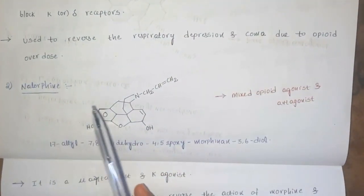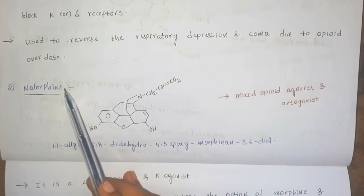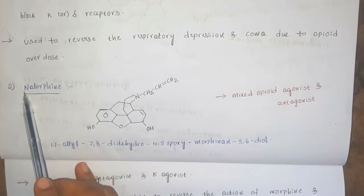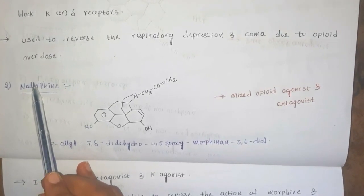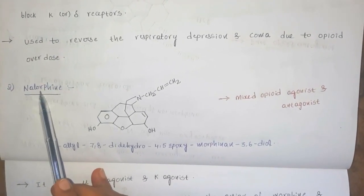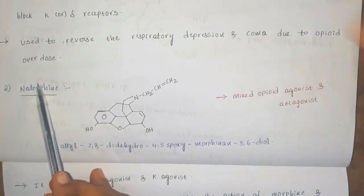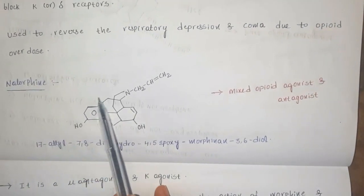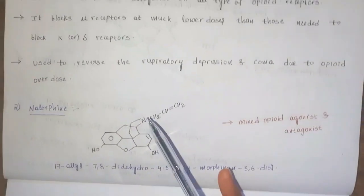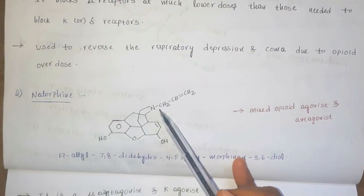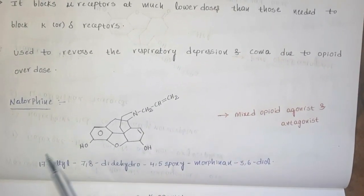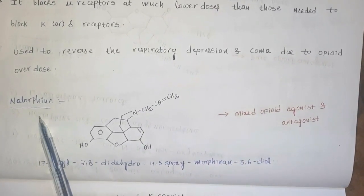The second drug is nalorphine. N means nitrogen which is directly attached to an allyl group, and it contains the morphine ring. This is the general structure of morphine, and at the 17th position the methyl group is replaced with an allyl group. So this is called as nalorphine.